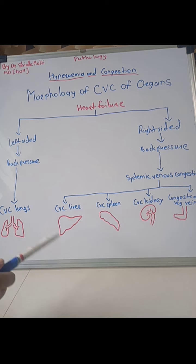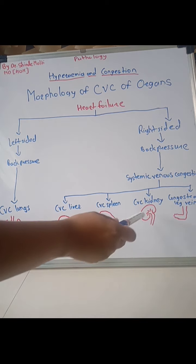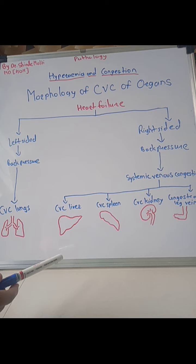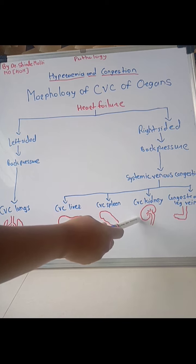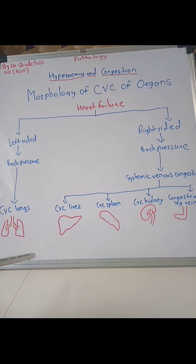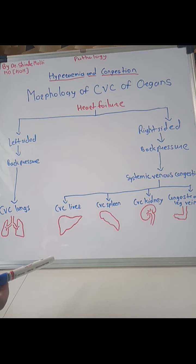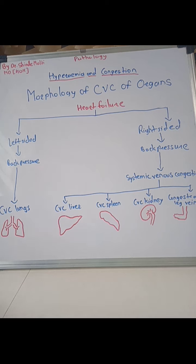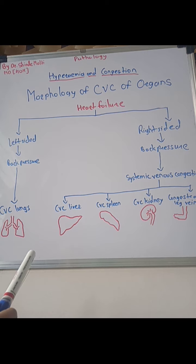In CVC of kidney, grossly the kidney is slightly enlarged and the medulla is congested. Microscopically, the changes are rather mild — the tubules may show degenerative changes like cloudy swelling and fatty change, and the glomeruli may show mesangial proliferation.